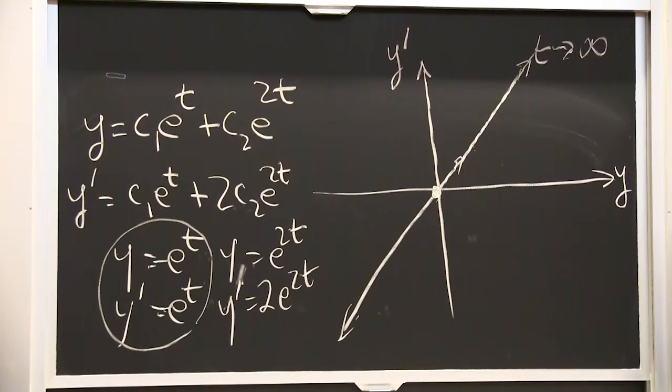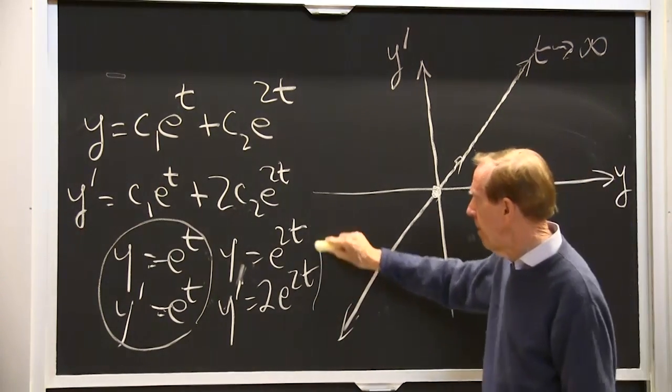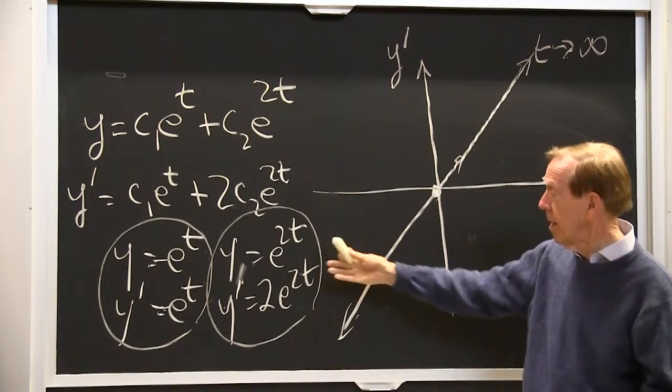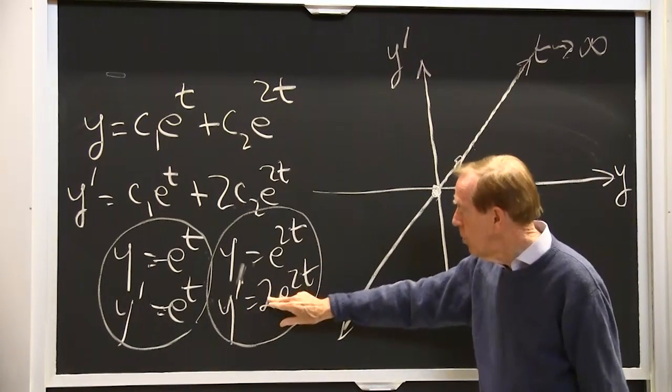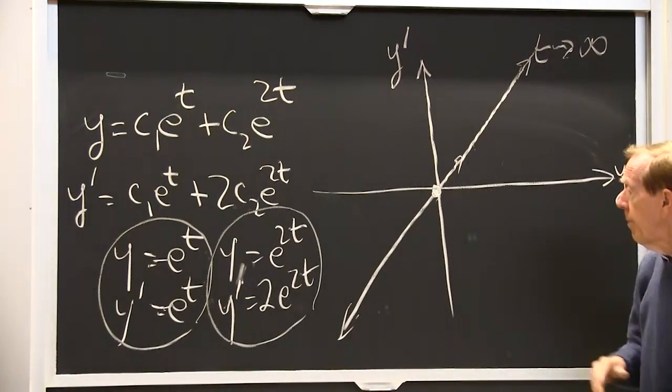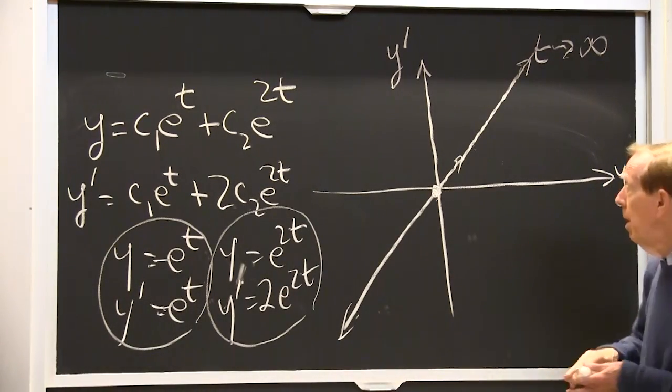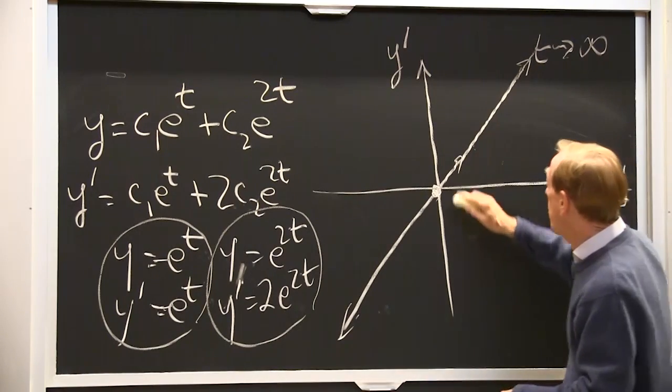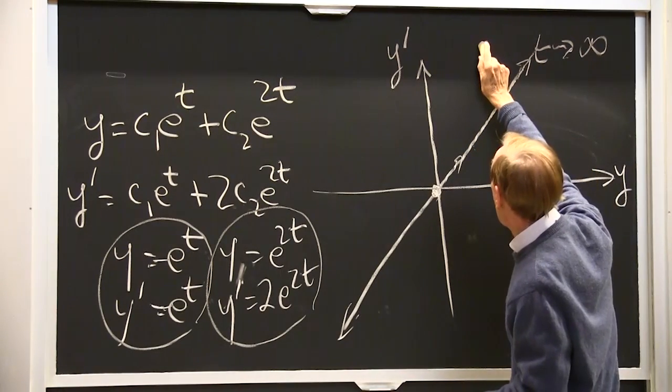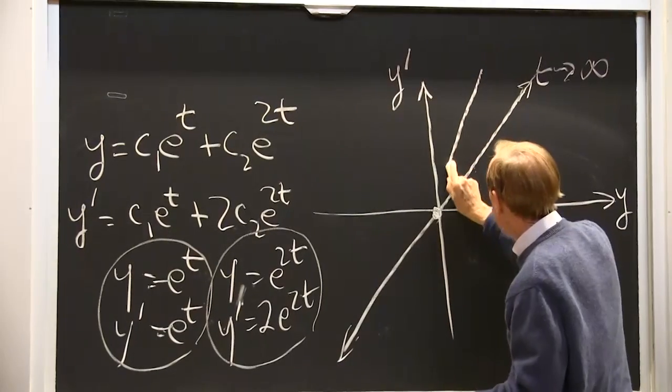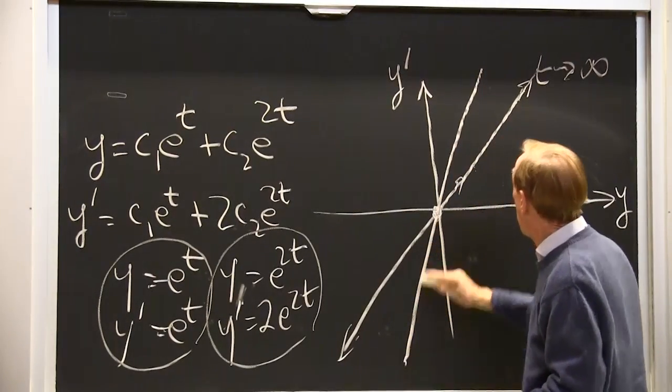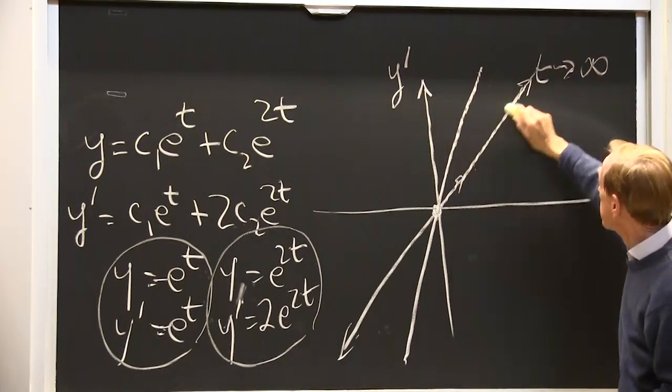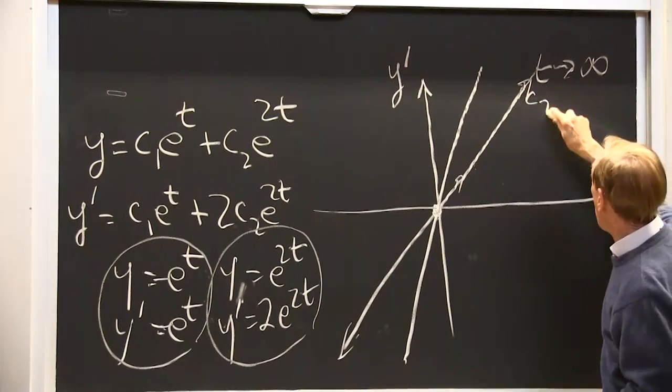What's happening in the phase plane for this solution? In this solution, in this case, y prime is 2 times y. So I'm staying on the line where y prime is 2 times y. It's a steeper line. This is the case, this was the line where c2 was 0.